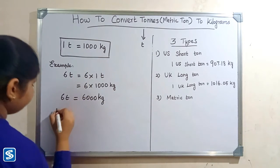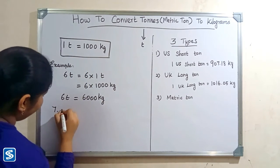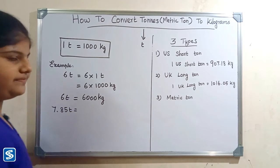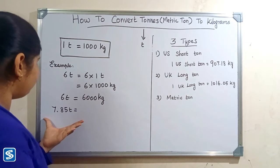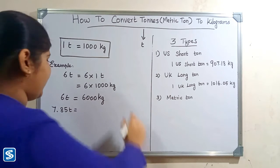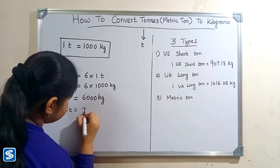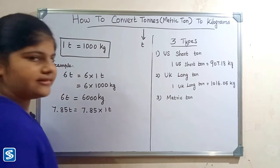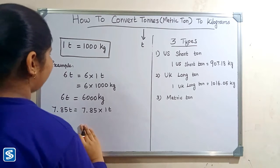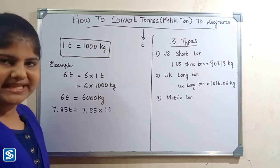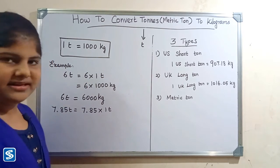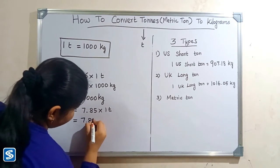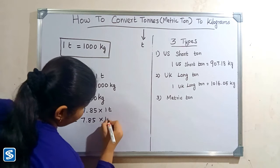Next we will take another example: seven point eight five tons. Seven point eight five tons can be written as seven point eight five multiply one ton. Now we have to substitute 1000 kilograms in the place of one ton, so seven point eight five multiply one thousand kilograms.